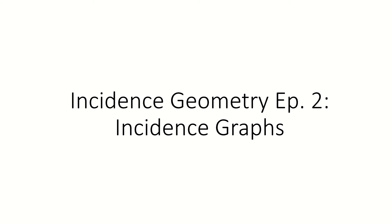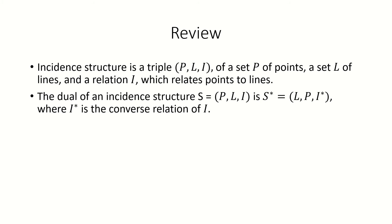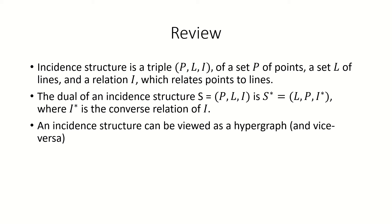Today we're going to continue our series on incidence geometry by talking about incidence graphs of incidence structures. To recap, an incidence structure is a triple consisting of a non-empty set of points, a possibly empty set of lines, and an incidence relation which relates points to lines. The dual of an incidence structure is the structure we get when we take the point set to be our new line set, and the line set to be our new point set, and we preserve incidence between pairs of objects. In my previous video, we talked about how incidence structures can be viewed as hypergraphs and vice versa.